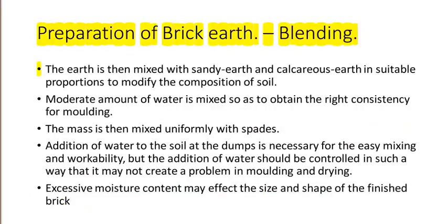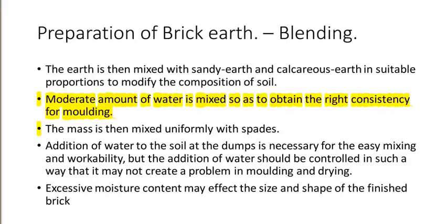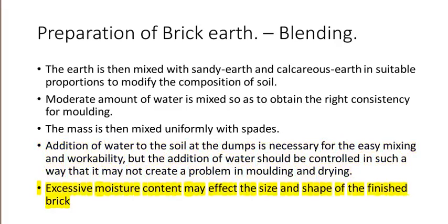Preparation of brick earth — Blending. The earth is then mixed with sandy earth and calcareous earth in suitable proportions to modify the composition of soil. A moderate amount of water is mixed so as to obtain the right consistency for molding, and the mass is then mixed uniformly with spades. Addition of water to the soil is necessary for easy mixing and workability, but the water addition should be controlled so that it does not create problems in molding and drying. Excessive moisture content may affect the size and shape of the finished brick.